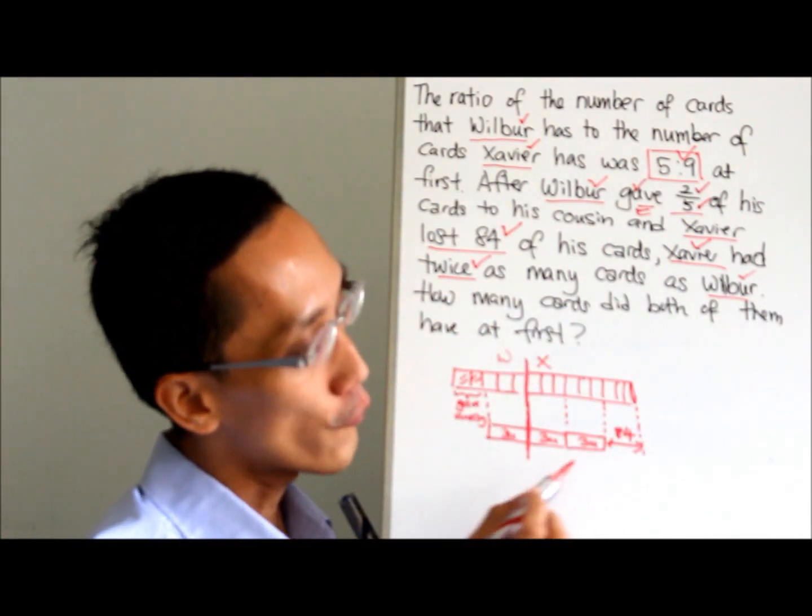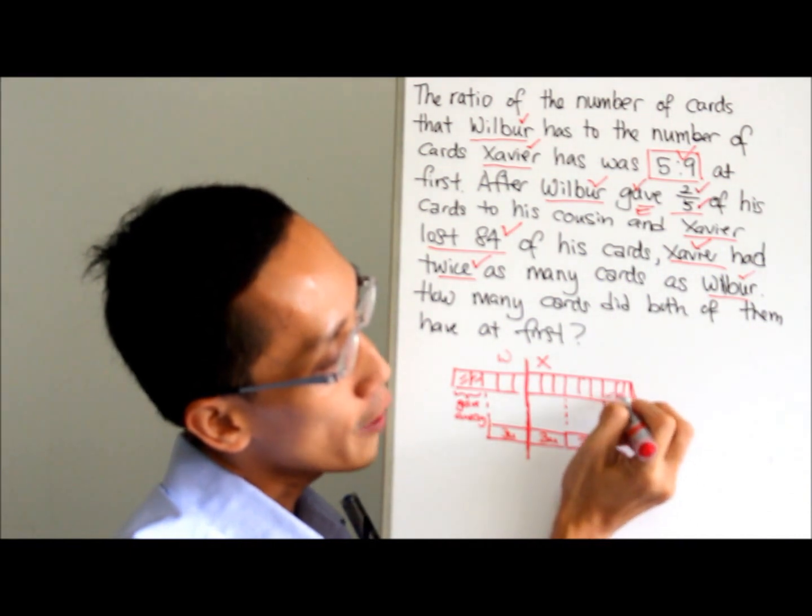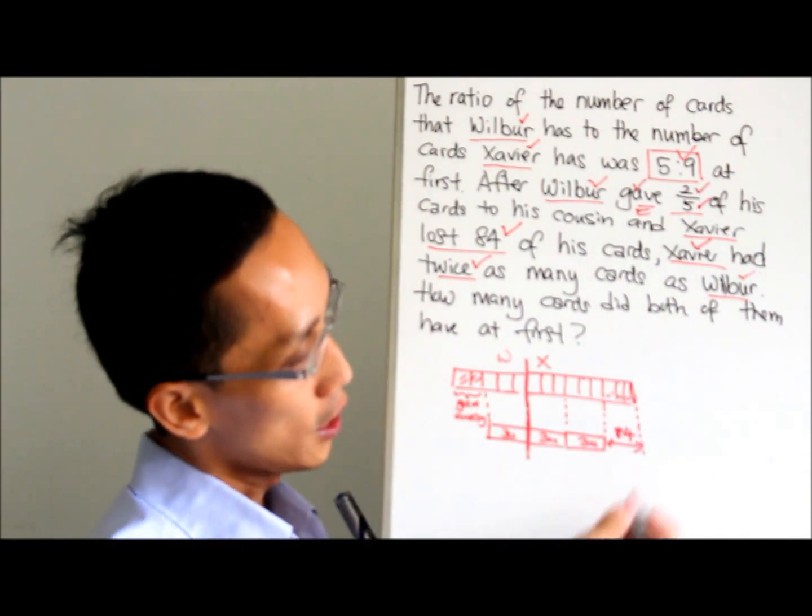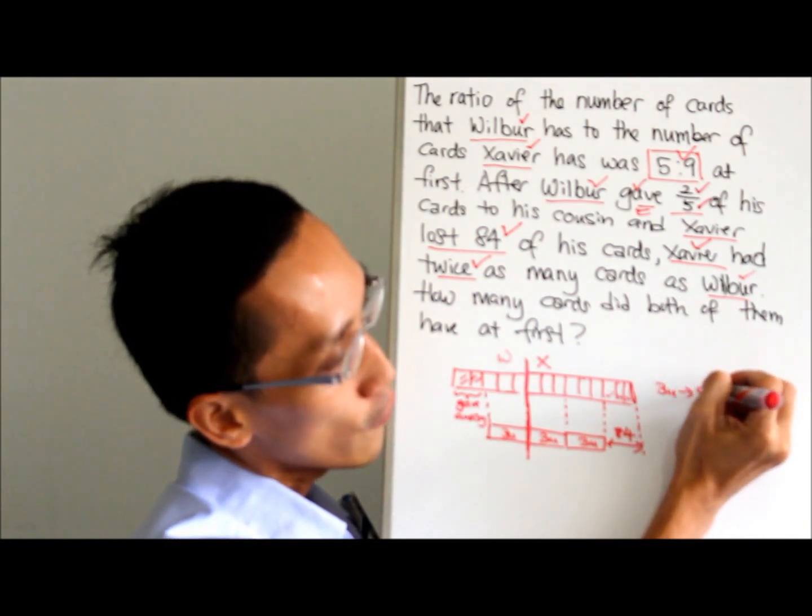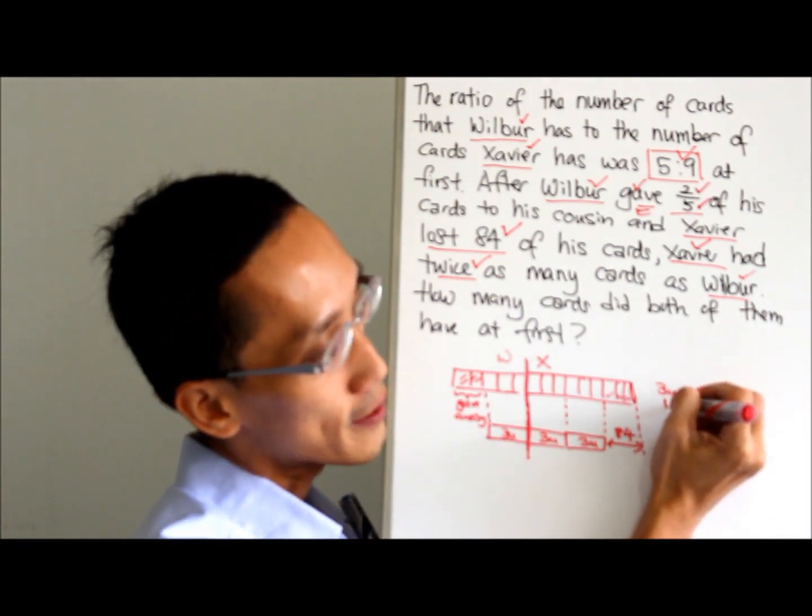From here, it's very obvious. You can see that here - one, two, three - three units is 84. So find one unit: 28.